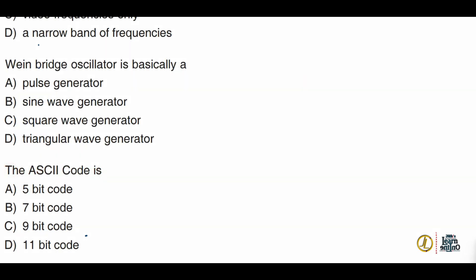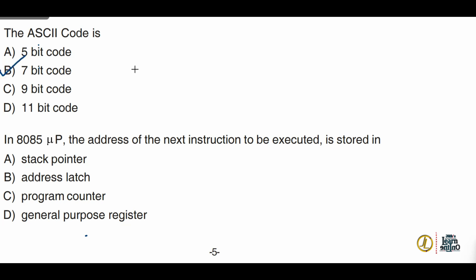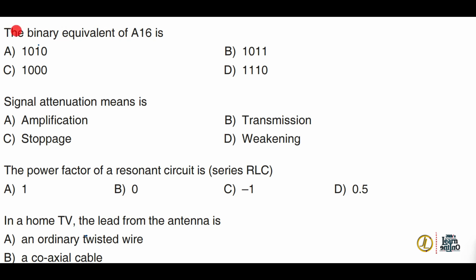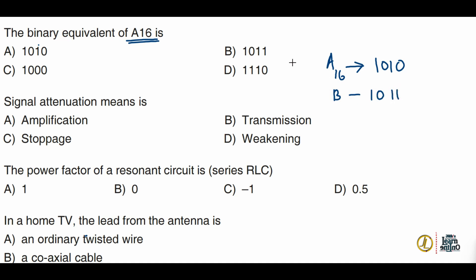Next: the ASCII code is a 7-bit code. Option B is correct. Next: the binary equivalent of hexadecimal A is — in the hexadecimal system, A represents 1010 and B represents 1011, and so on. So A represents 1010, and option A is correct.